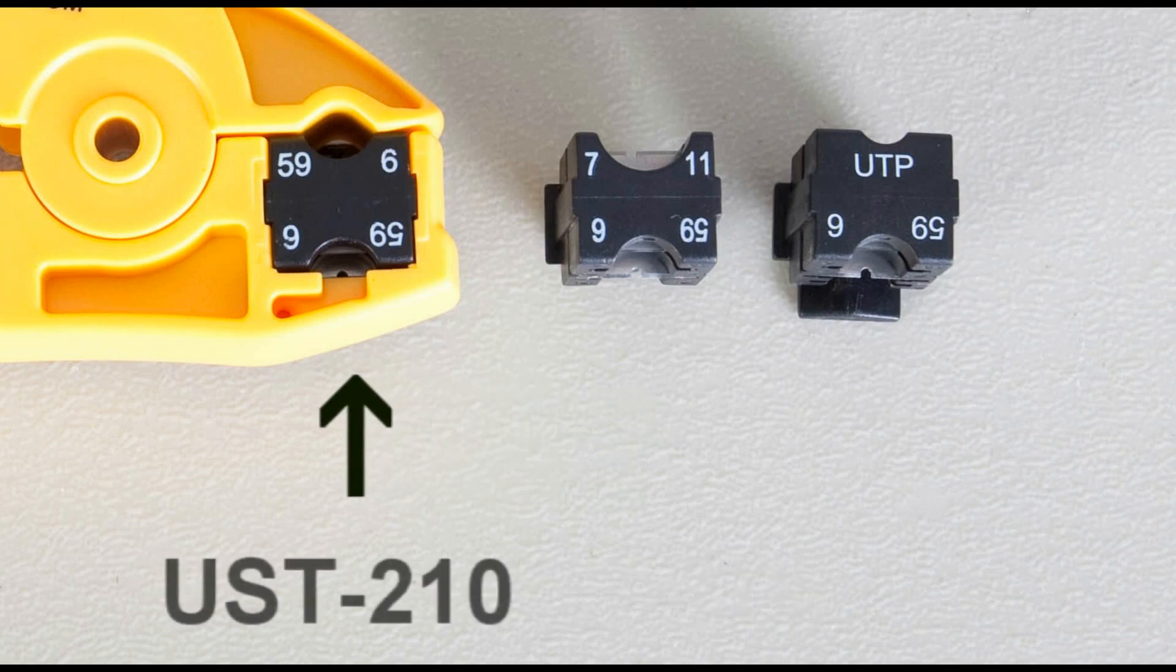The UST1596 model uses the UST210 cartridge, a double-sided RG59 and RG6 coax blade, giving you a blade exclusively for RG59 and RG6 cables.